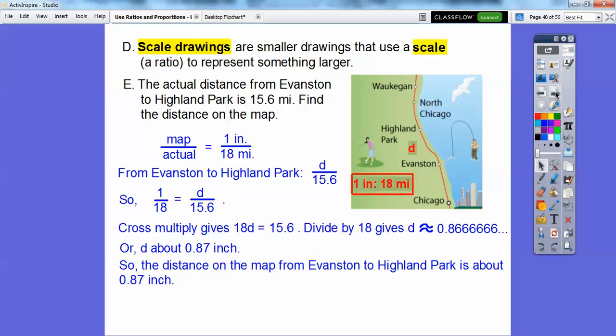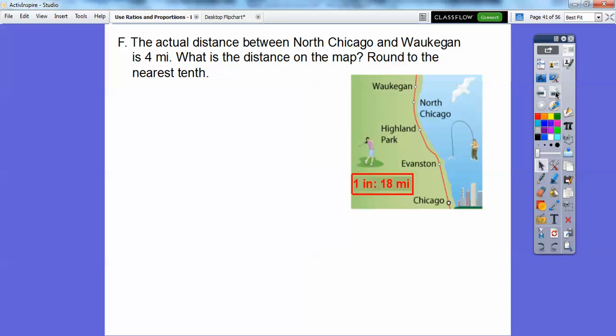All right, so the distance on the map from Evanston to Highland Park is about 87 hundredths of an inch. All right, let's try another one here with this same map, you guys.